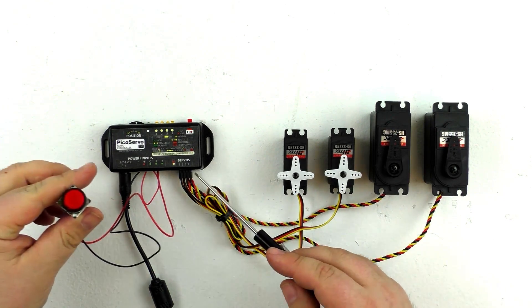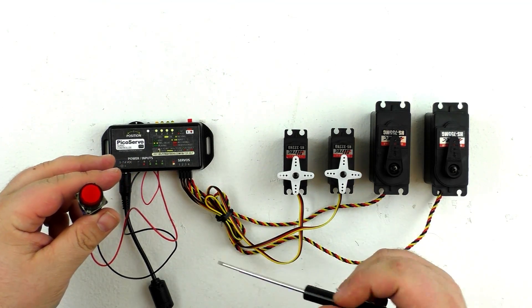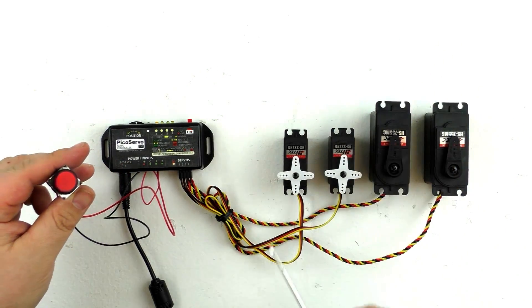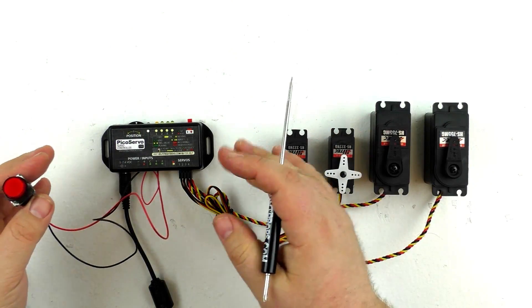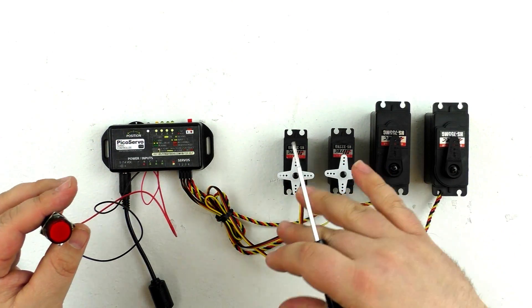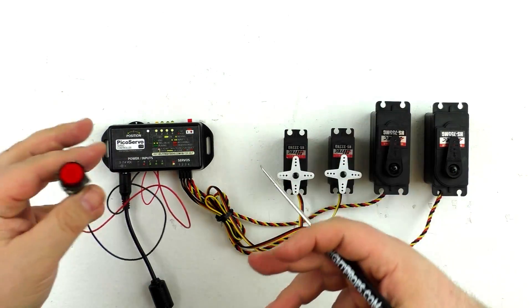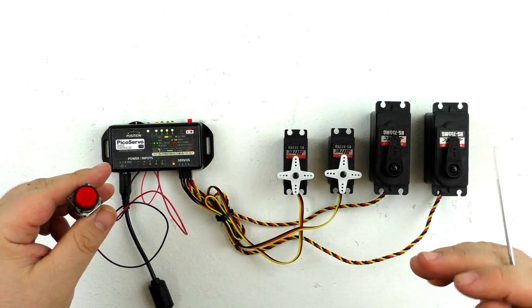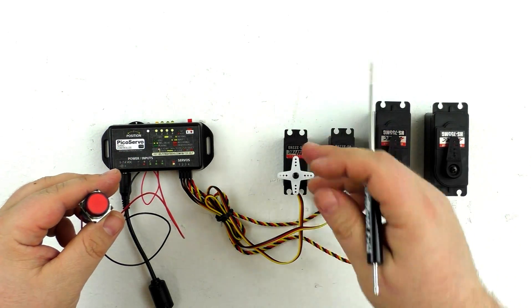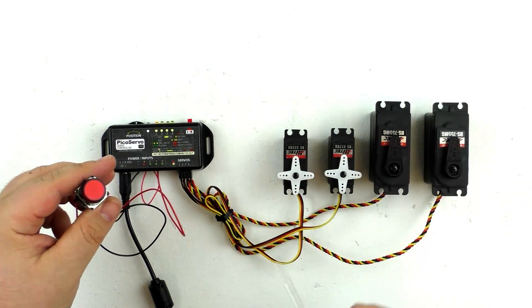The PicoServo actually has two trigger inputs, which means you could have a different show that played when a different trigger was activated. You can have a show on input one, a show on input two. You can also loop trigger input number one to have an ambient show, so the servos can be moving all the time when the unit is powered on. And then input number two can interrupt that to change the movement when a trigger is tripped.